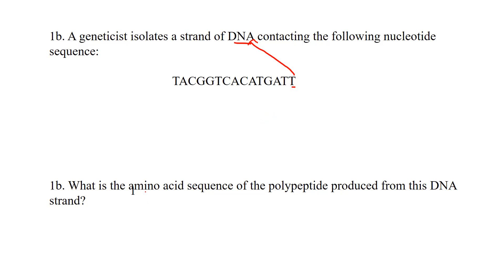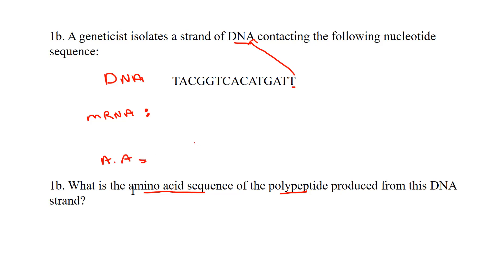They're asking: what is the amino acid sequence from the polypeptide produced with this DNA strand? We know this is DNA, and since your library is a messenger RNA library of codons and their corresponding amino acids, what we must do is transcribe this into messenger RNA before we can determine what the amino acids are going to be. That's in the library, but it's a messenger RNA library — so that's what we have to do.